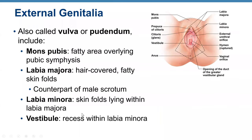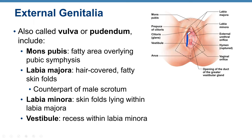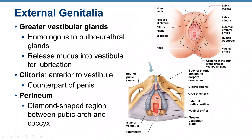External genitalia, also called the vulva or pudendum, includes the mons pubis (fatty area overlying the pubic symphysis), labia majora (hair-covered fatty skin folds; counterpart of the male scrotum), labia minora (skin folds lying within the labia majora), and the vestibule (the recess within the labia minora). Greater vestibular glands are homologous to the bulbourethral glands and release mucus into the vestibule for lubrication.